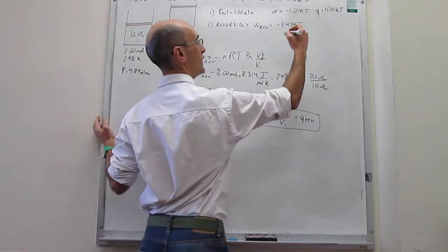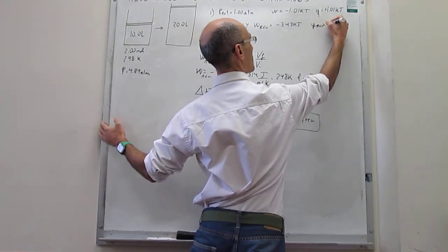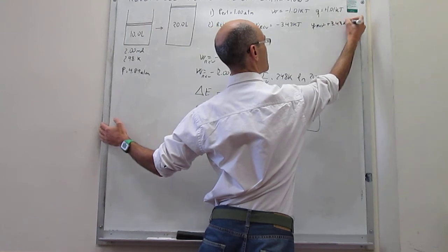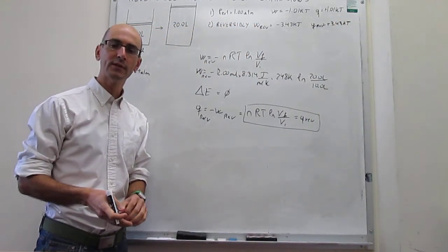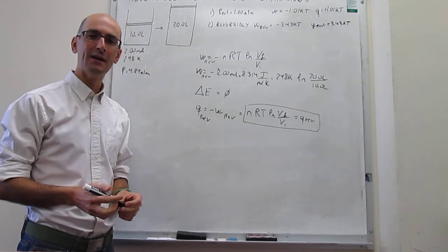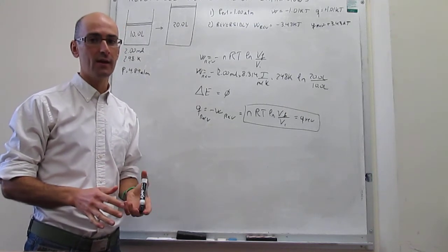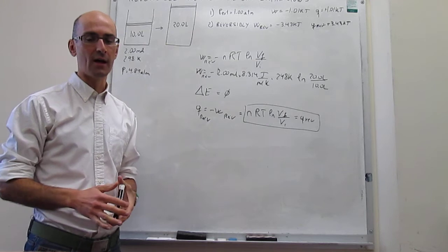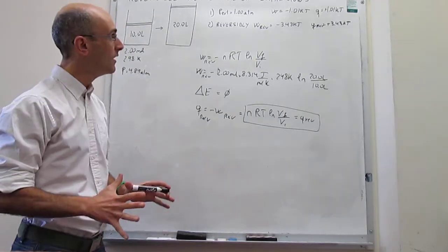Q_rev is equal to +3.43 kJ. This numerical example tells you that you always get less work in an irreversible process than in the idealized reversible case, where you get maximum work.